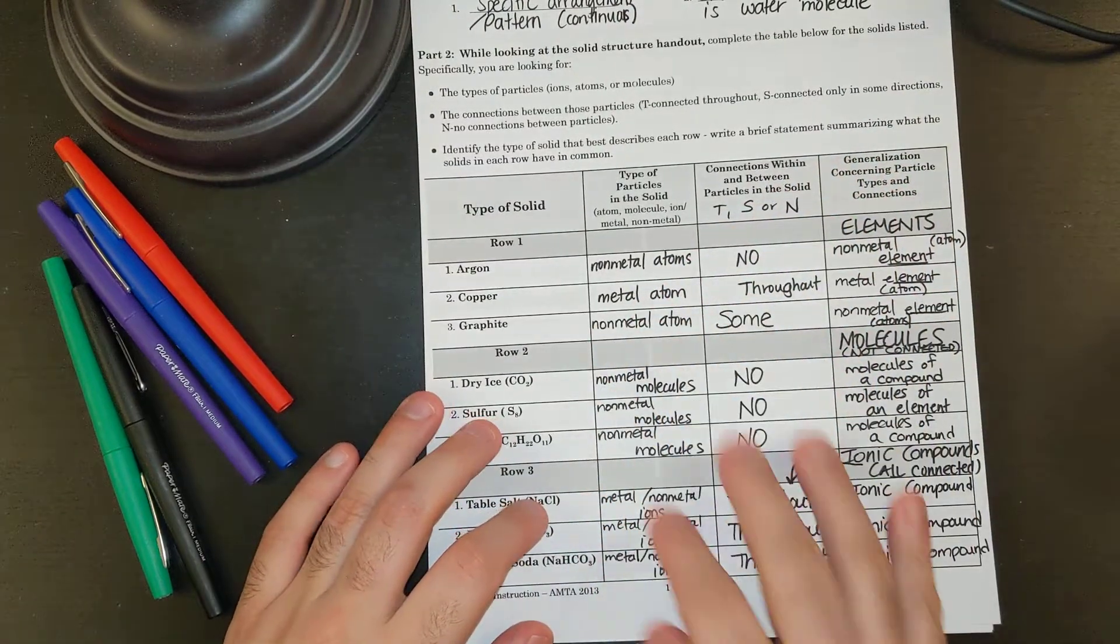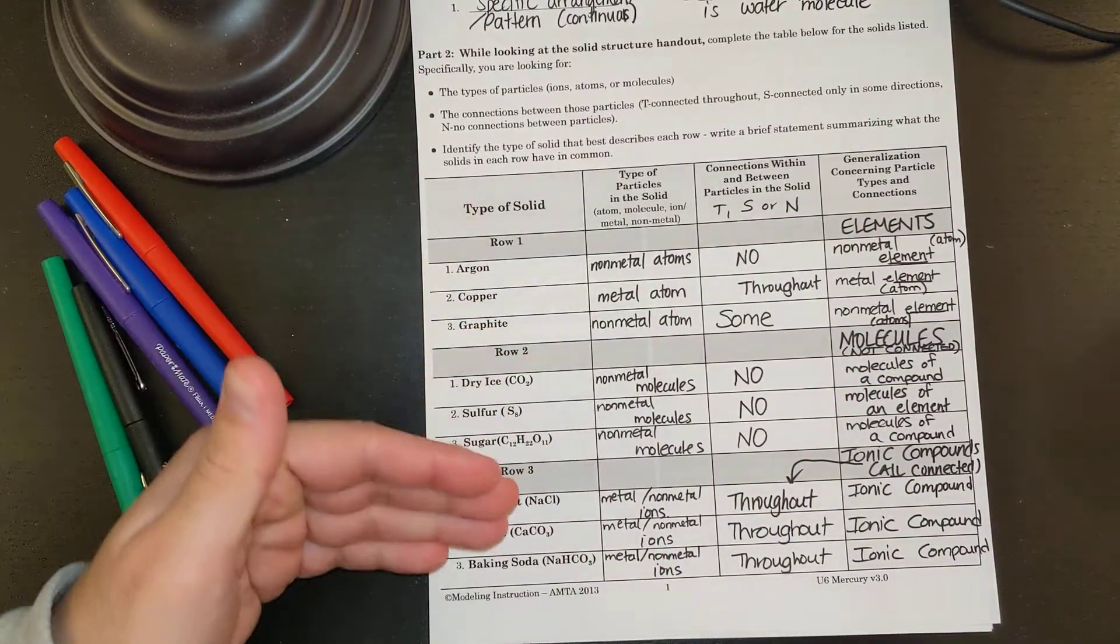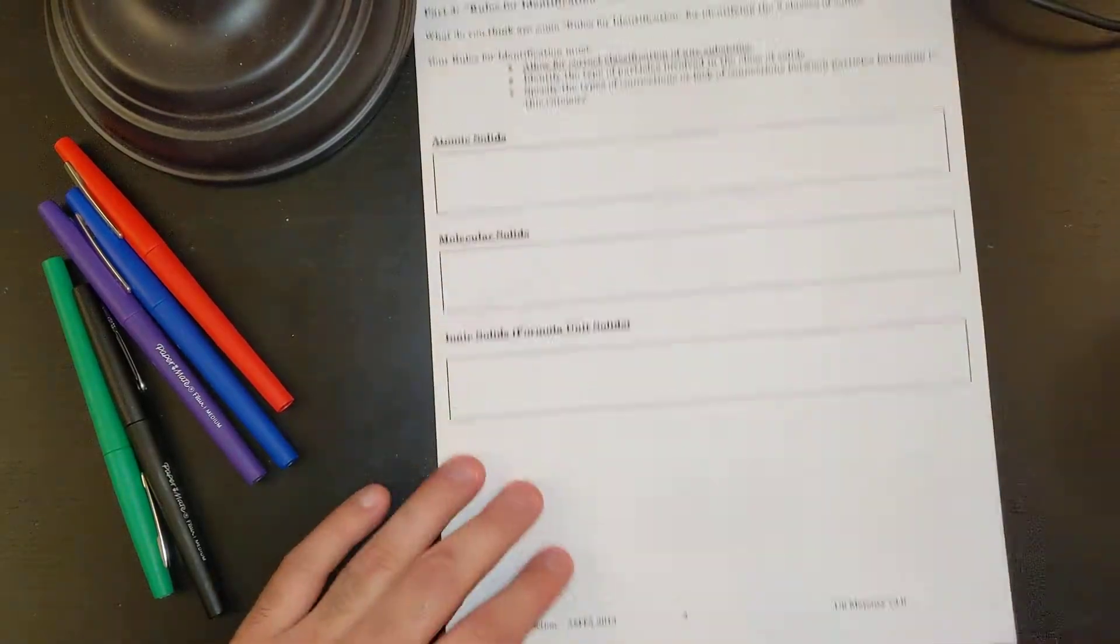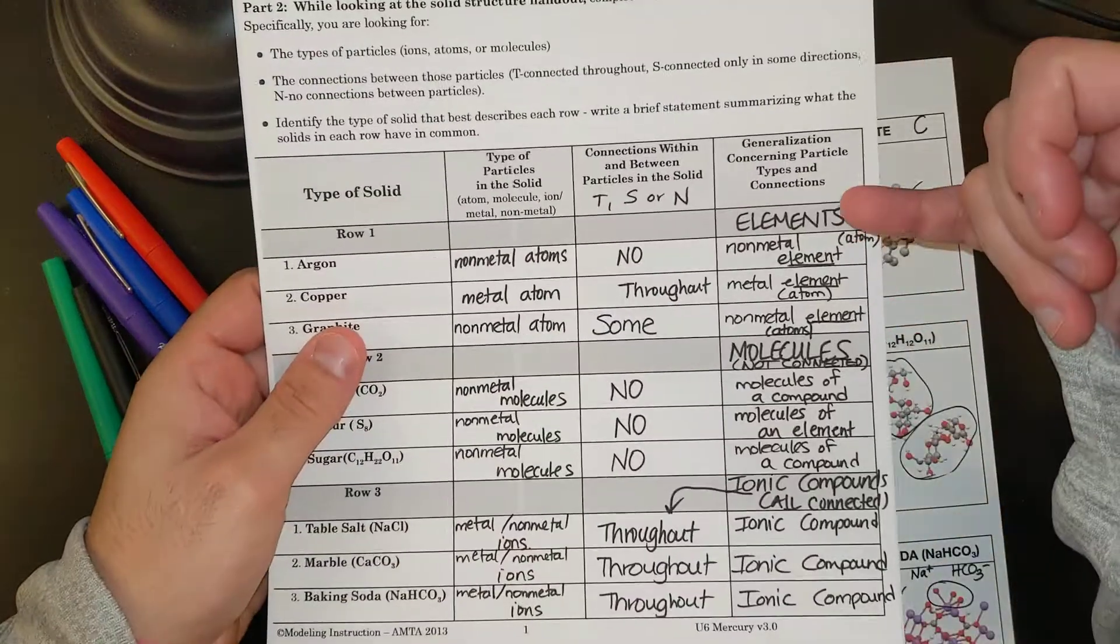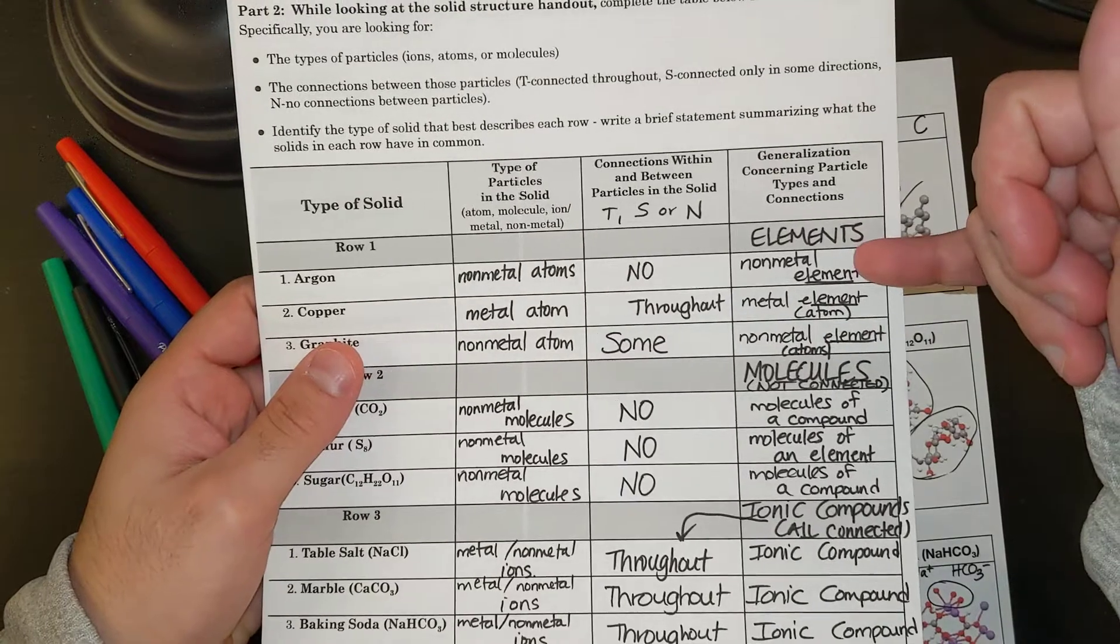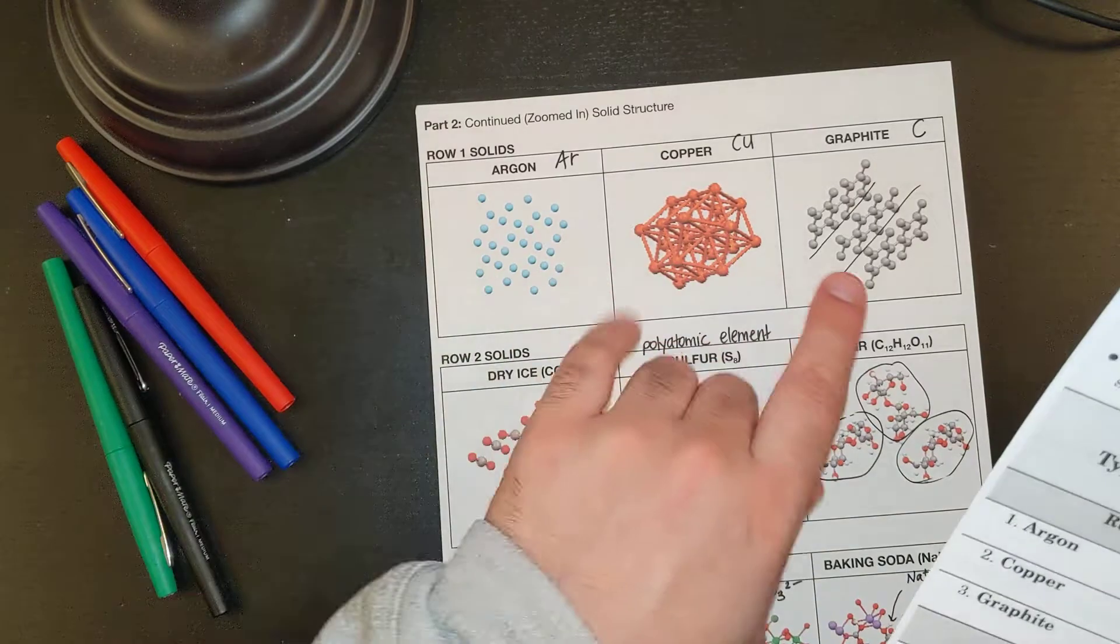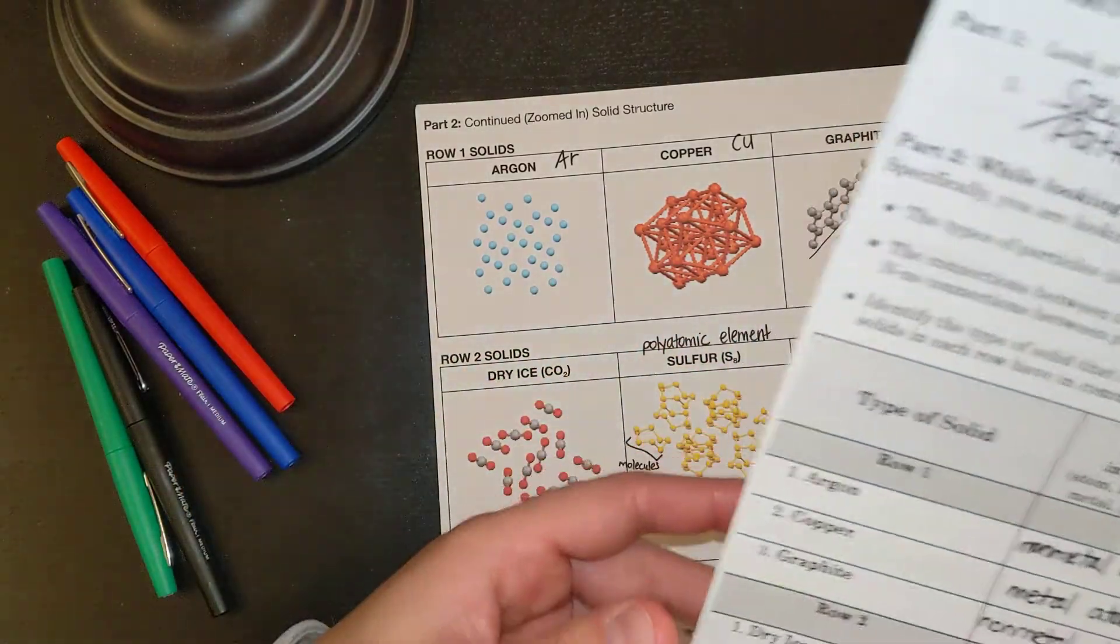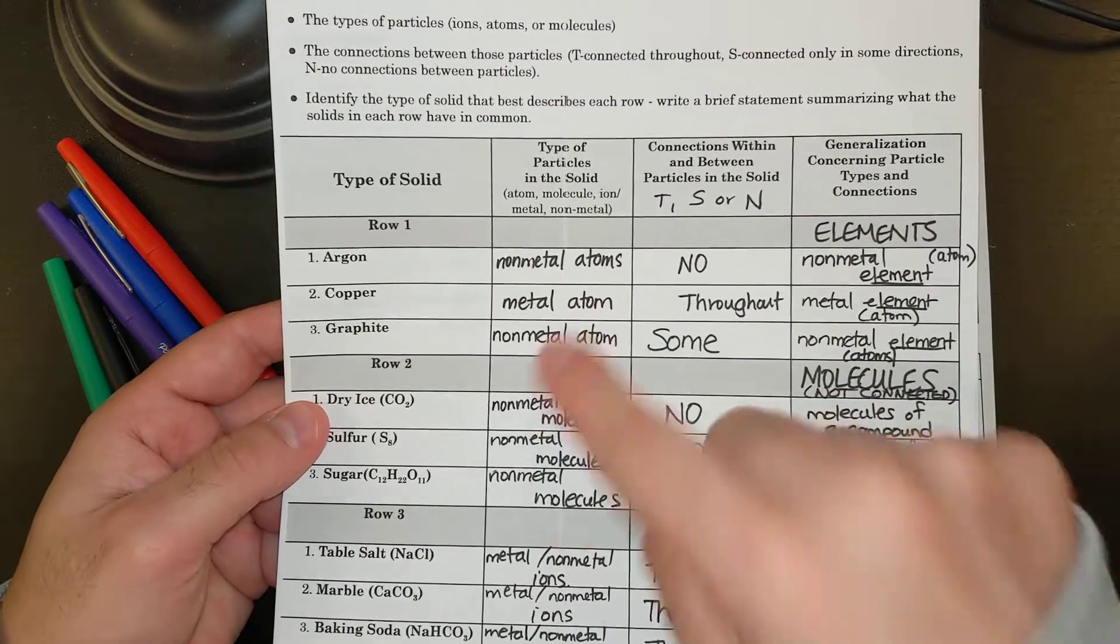We last ended in the last video putting together some generalizations about the different rows of solids. Here are row one solids, and our generalization that they were mostly like elements. Some were connected, some were not. But our generalization is that the basic particle is an element. Some may be connected, some may not be connected. Though, it's looking that the only thing that's connected was the metal atoms.